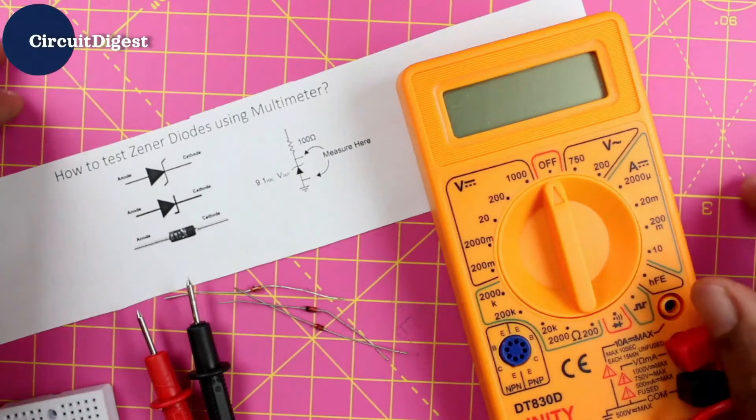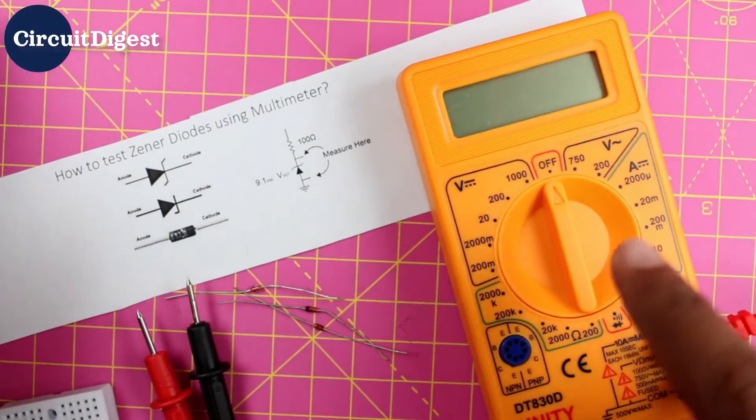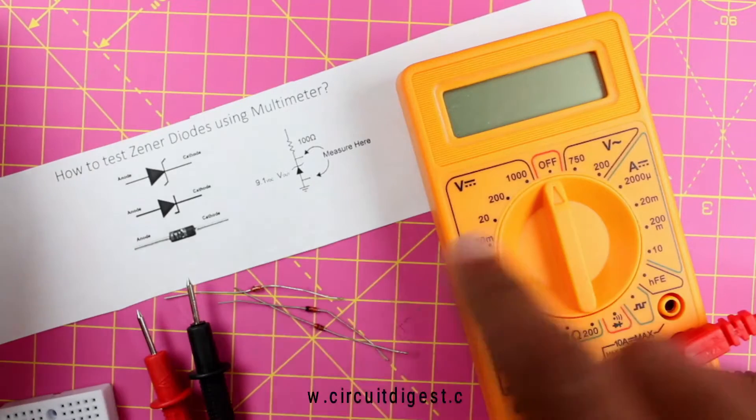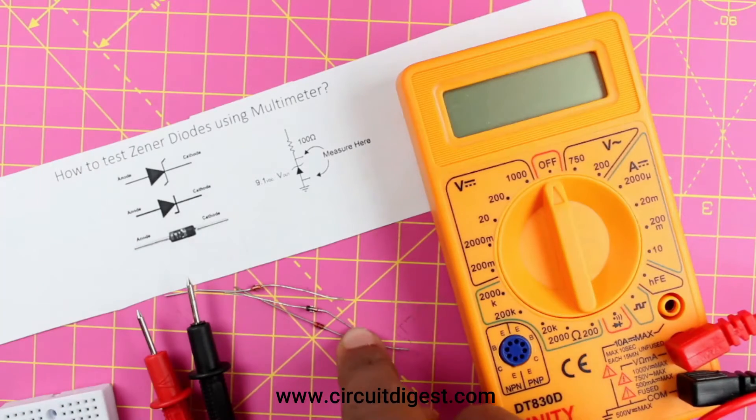Hi, this is Ashwin from CircuitDigest and in this video I'll show you how you can use a multimeter like this one to check if your zener diode is working or not.